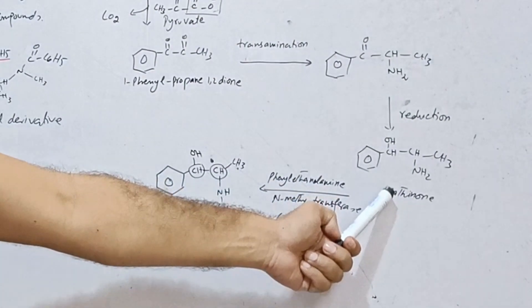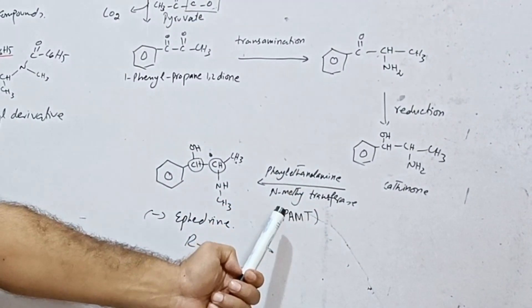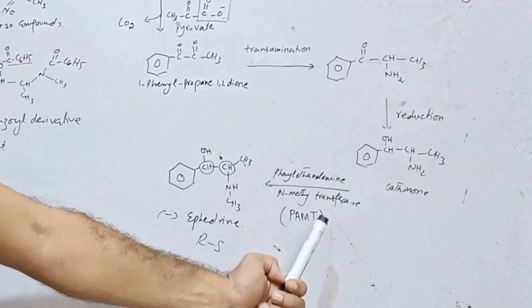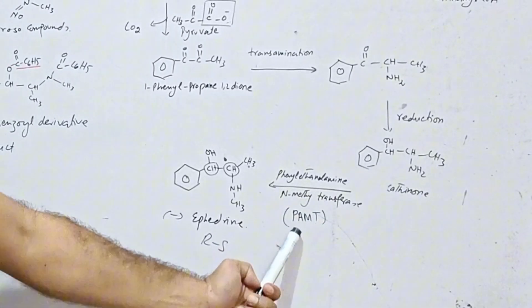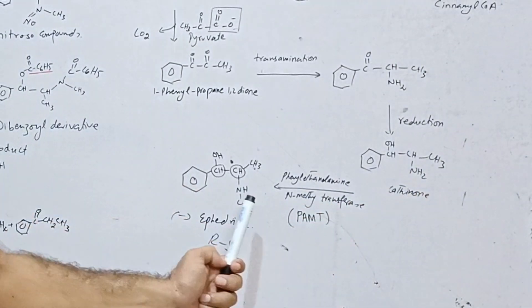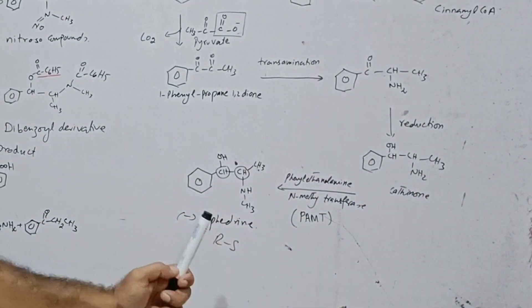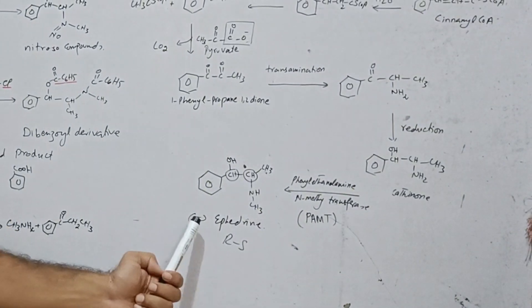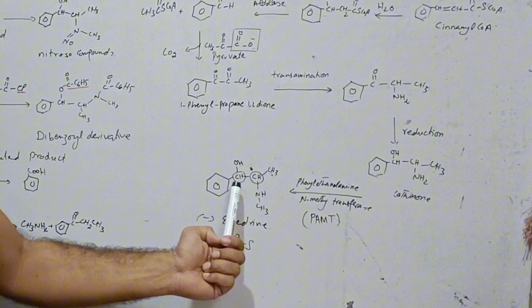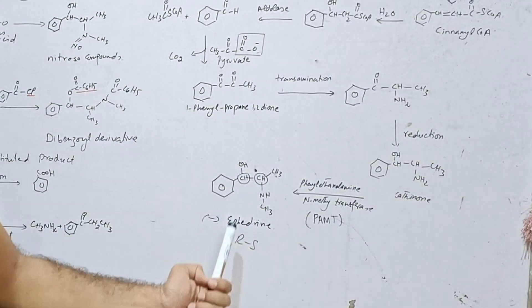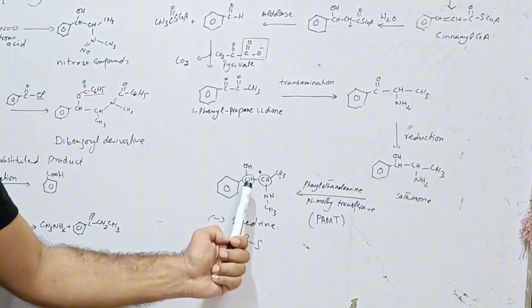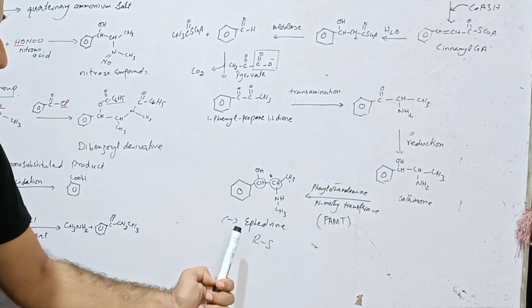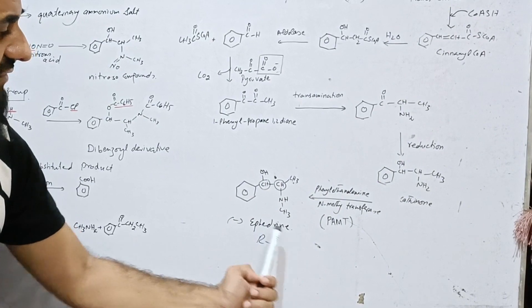I generally discuss the cathinone. Then in the presence of phenyl ethanol amine N-methyltransferase, PAMT, this enzyme causes N-methylation here. And we get the ephedrine. So ephedrine specifically called stereochemically to that isomer, which is here at this carbon, the configuration is R and here is S. And overall, we can say the minus ephedrine.